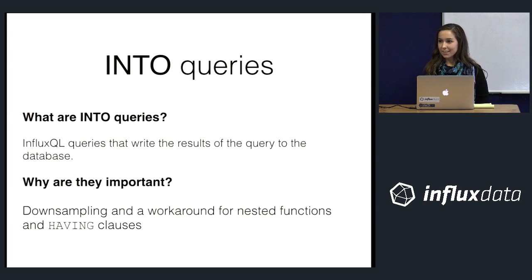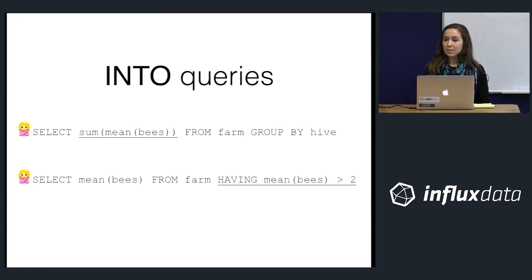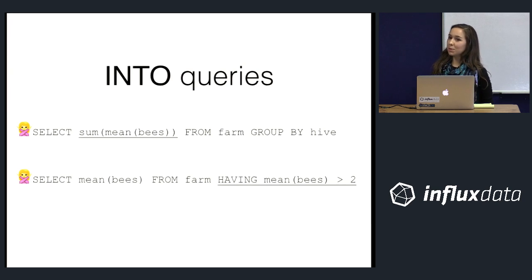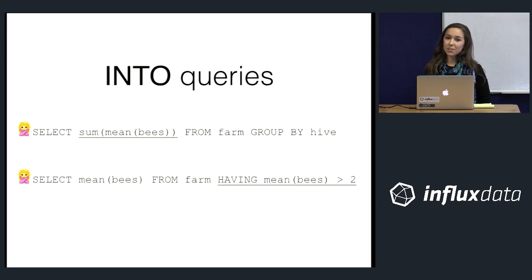I'm not going to cover downsampling today — there's a guide in the docs I recommend for that. I'm going to talk about using INTO queries as a workaround for nested functions and HAVING clauses. The two queries shown here are invalid in InfluxDB: the first has a nested function — a function within a function — and most InfluxQL functions don't work with nesting. The second has a HAVING clause, which would return the mean value of 'bees' only if that mean was greater than two.